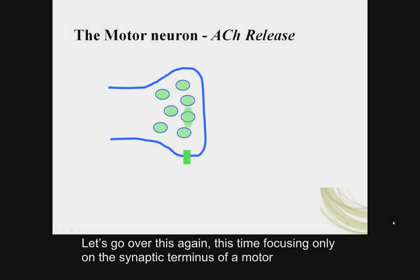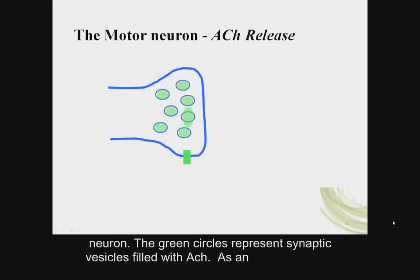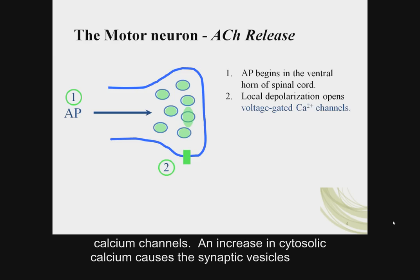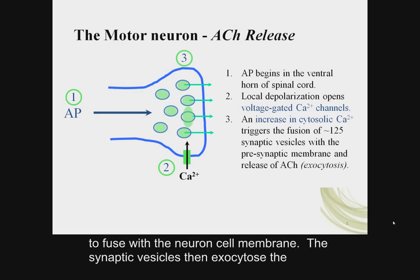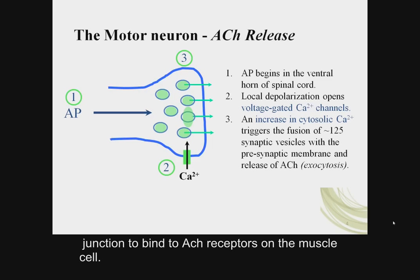Let's focus on the synaptic terminus of a motor neuron. The green circles represent synaptic vesicles filled with acetylcholine. As an action potential travels down the axon, this causes the opening of voltage-gated calcium channels. An increase in cytosolic calcium causes the synaptic vesicles to fuse with the neuron cell membrane and exocytose the acetylcholine into the synaptic cleft. The acetylcholine can then diffuse across the neuromuscular junction to bind to acetylcholine receptors on the muscle cell.